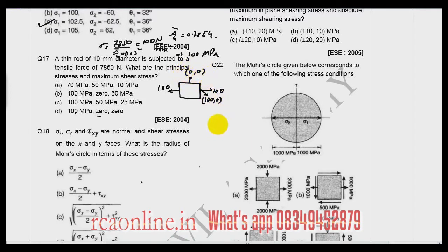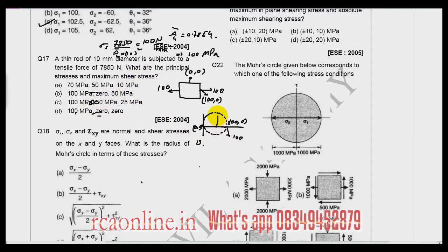The coordinate on the other plane is (0, 0). Drawing the Mohr circle with ordinates at (100, 0) and (0, 0), the principal stresses are 100 and 0. The maximum shear stress equals the radius of the Mohr circle, which is 100 divided by 2 = 50. So the answer is: principal stresses 100 and 0, maximum shear stress 50 — answer D.